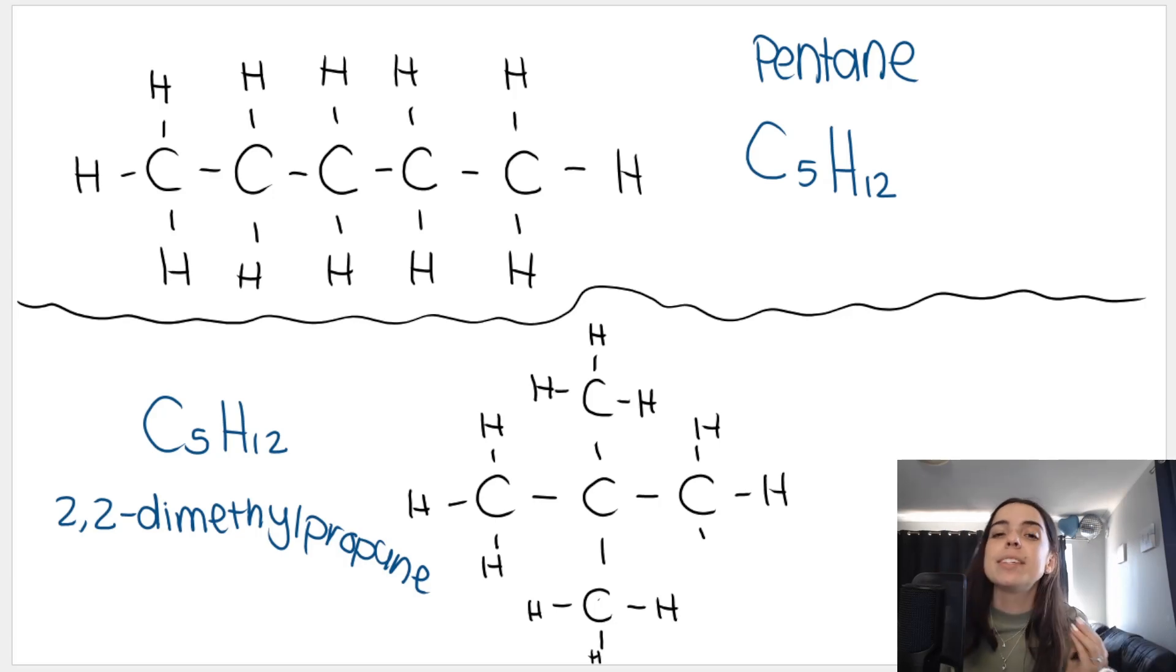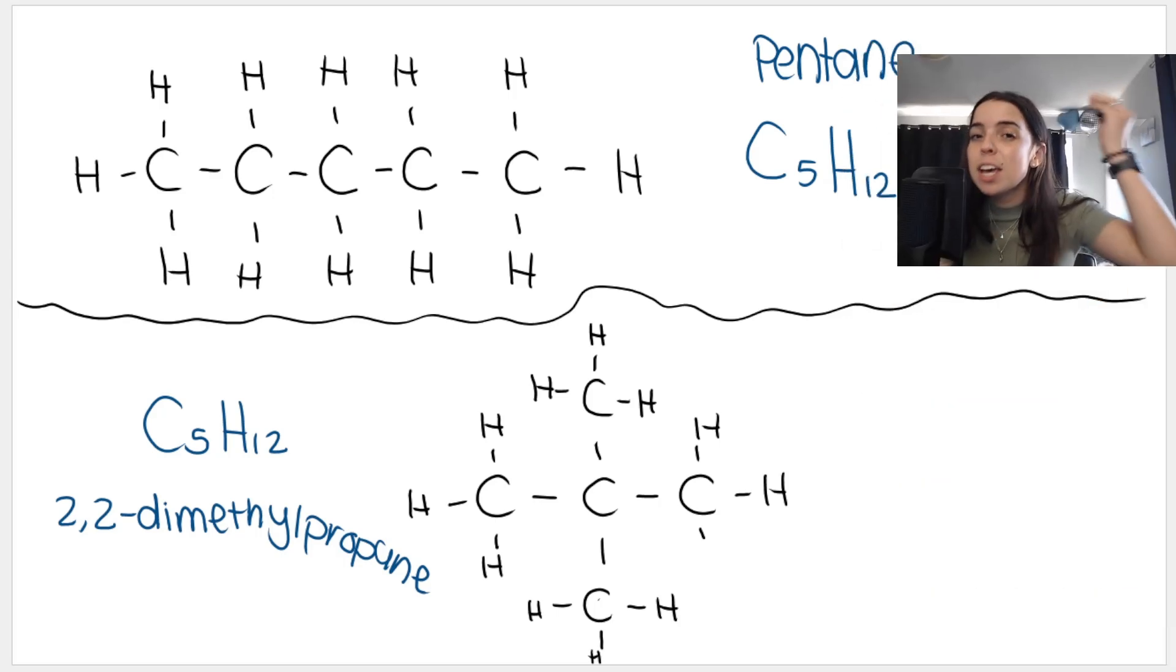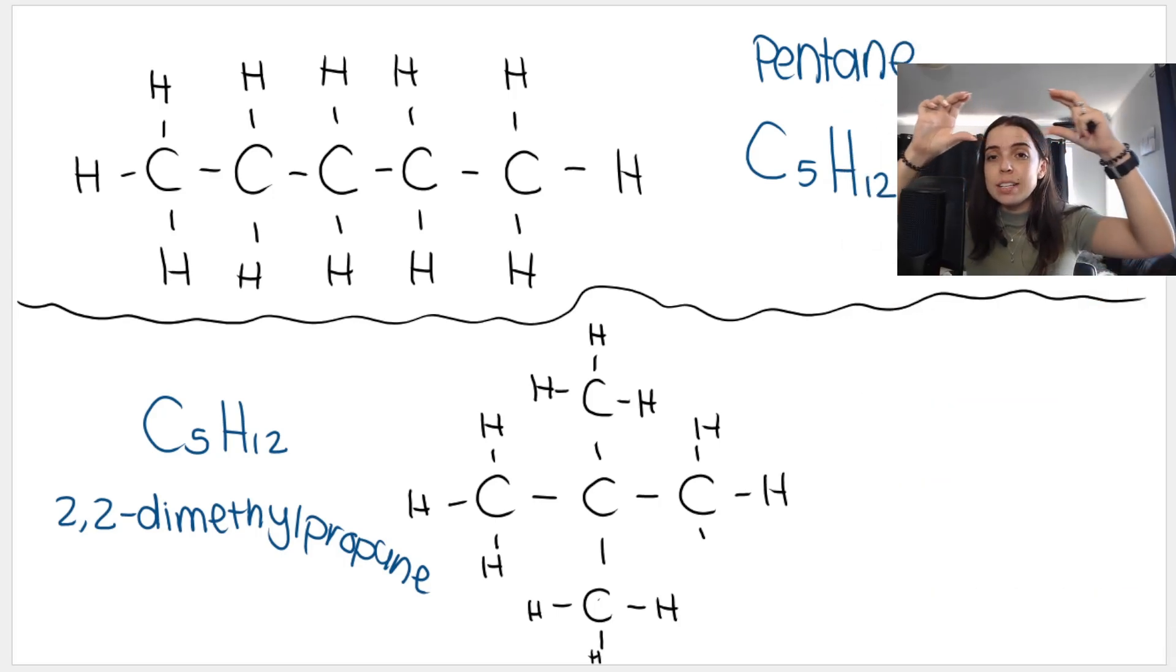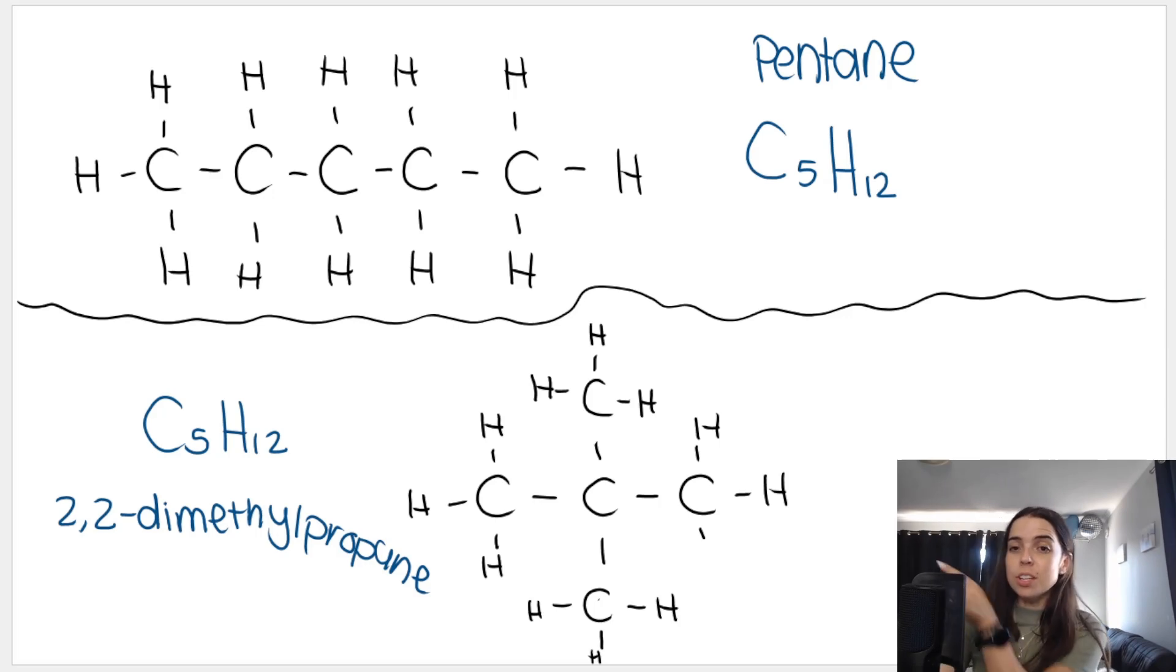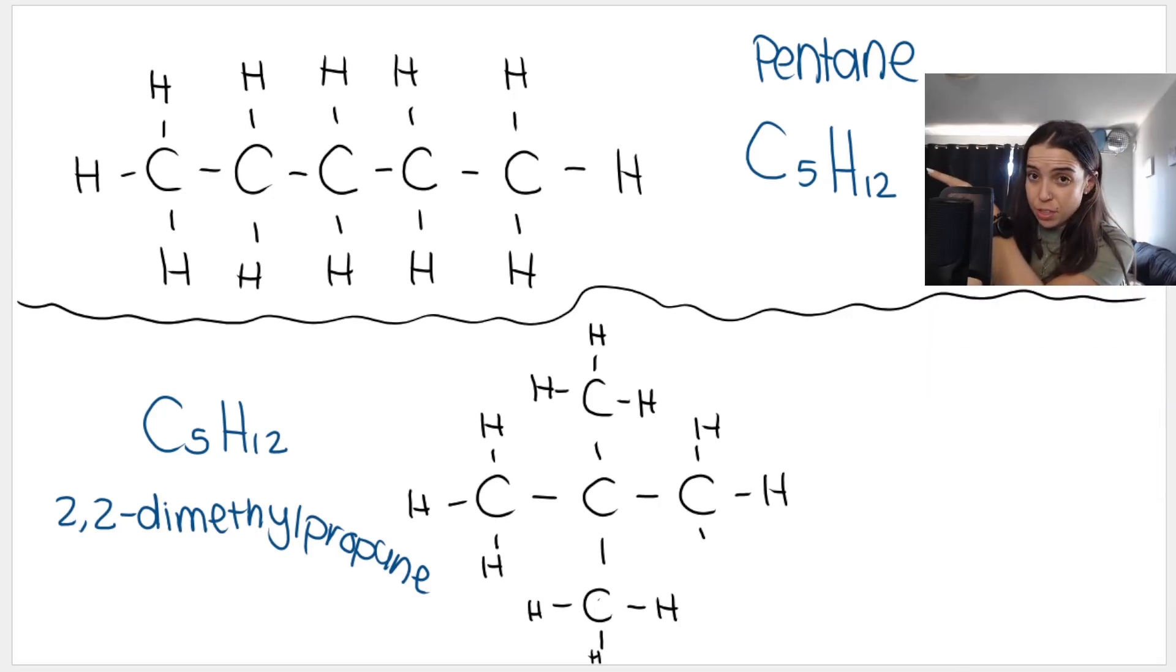Can you see that they have the same number of hydrogens and carbons? Therefore, they would have the same molecular mass. But pentane has a straighter, longer chain with no branching, and 2,2-dimethylpropane has two branches. So this one is way more branched than this one.